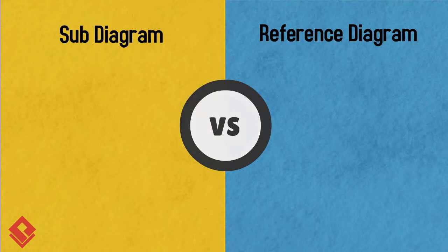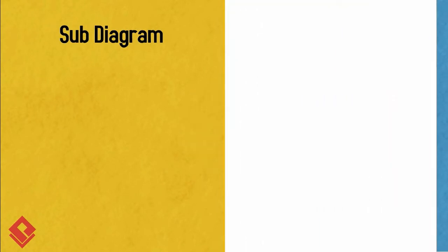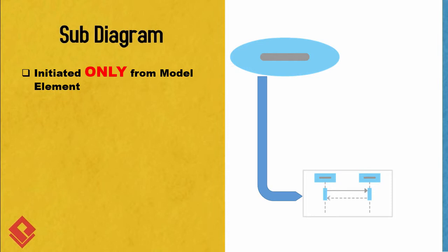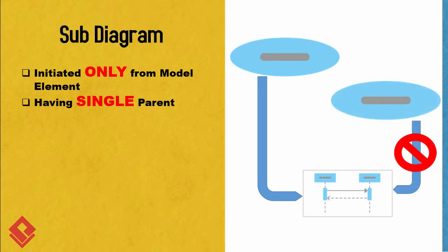First, we compare the initiation point between the two features. The subdiagram represents a drill-down of a particular model element. Therefore, it can only be initiated from a model element. As the subdiagram represents the drill-down of a model element, the source model element becomes the parent of the subdiagram. Since each diagram can only have one parent, you cannot have multiple model elements having the same diagram as a subdiagram.